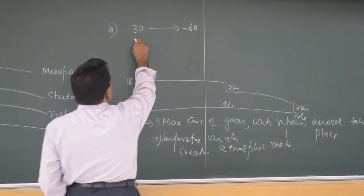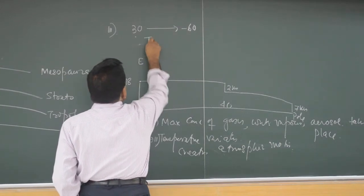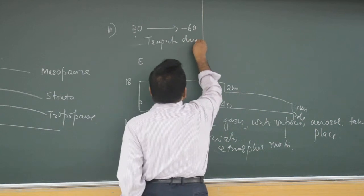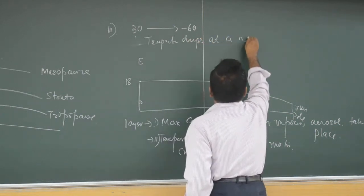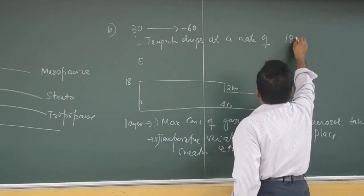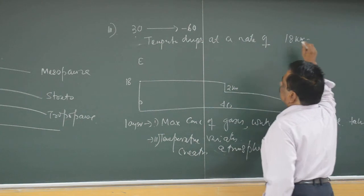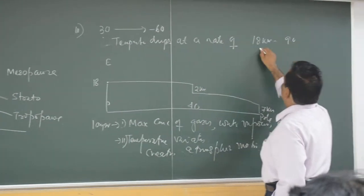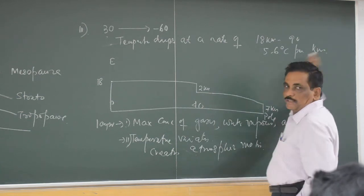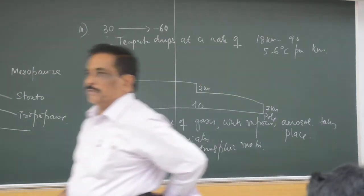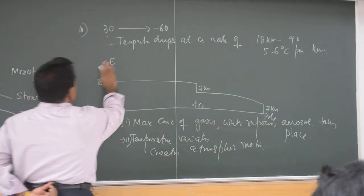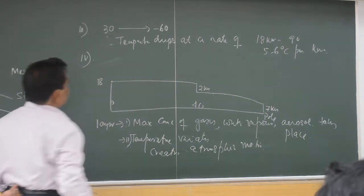Now, the temperature drops at a rate — can you tell me how much? So over distance, it means about 9 to 10 degrees per unit, similarly 5 to 6 degrees. So you get about 4 to 1 kilometer — this is the drop of temperature. Understood? This is from your geographic school classes.